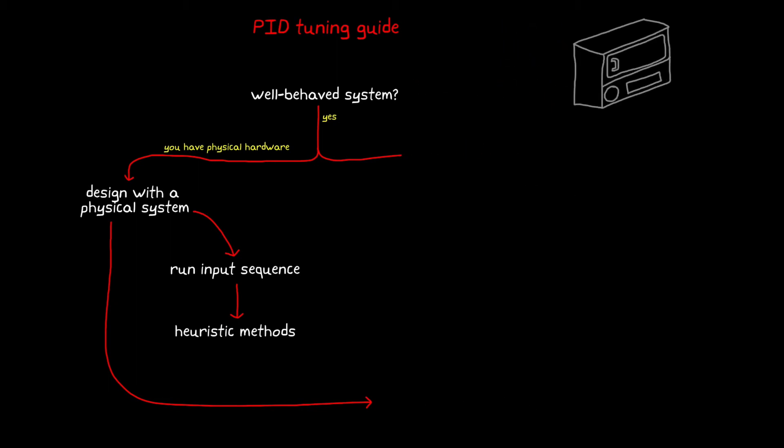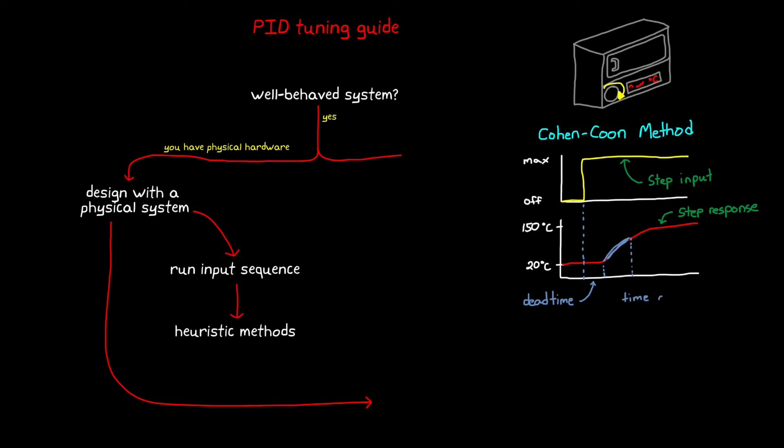For a thermal chamber example with the Cohen-Kuhn method, you could start with the oven at room temperature, step up the heater command to fully on, and then watch how the chamber temperature rises and eventually settles out. From this response, you could measure the delay or the dead time, the gain, and the time constant, and then plug those into an equation to get your initial gains.